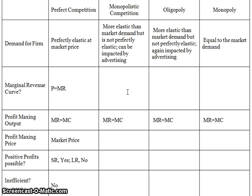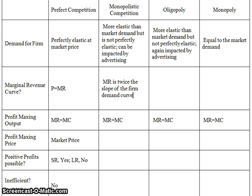For a monopolistically competitive firm, its marginal revenue curve is twice the slope of the firm demand curve, and that's going to be true no matter what it looks like. The reason for this is that there is a tradeoff in revenue between increased sales and having to cut your price on all those previous units.